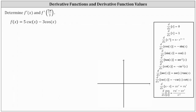We are given f of x equals five cosecant x minus three cosine x and we're asked to determine f prime of x and f prime of five pi divided by three. Let's begin by determining the derivative function. We have the needed derivative formulas shown here on the right.